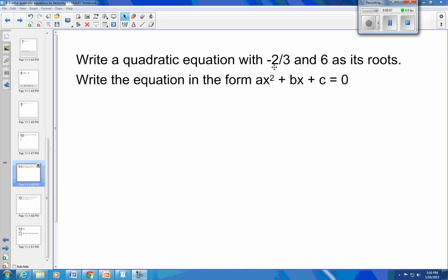This is what to do whenever you're given the roots and you're being asked to write the equation. You're given the roots, so that means that x has to be equal to negative 2 thirds and x has to be equal to 6.